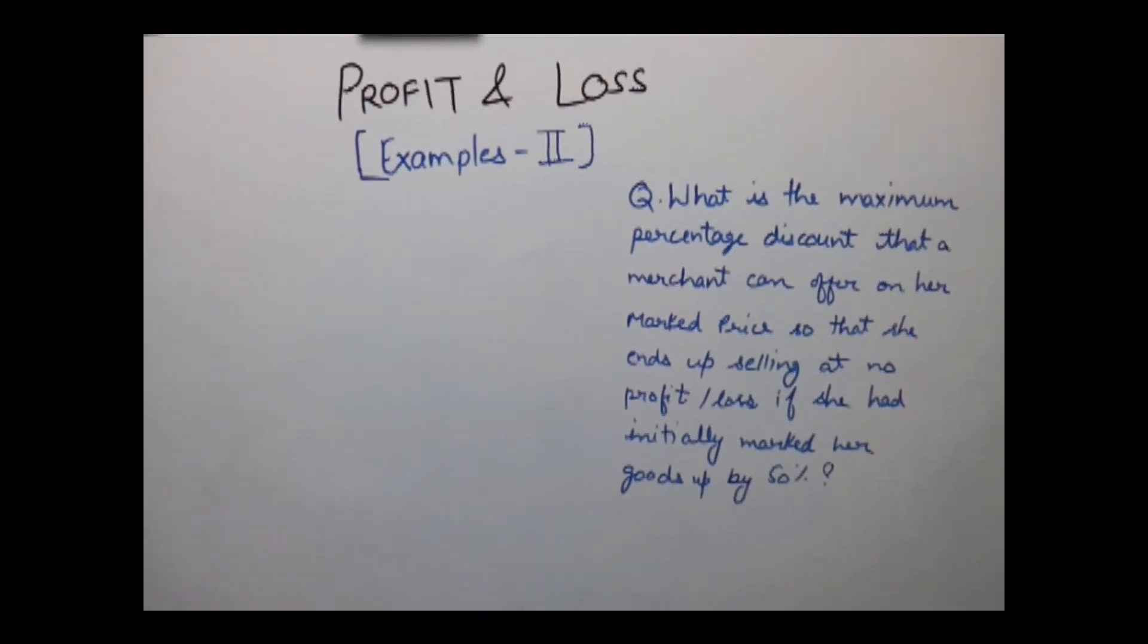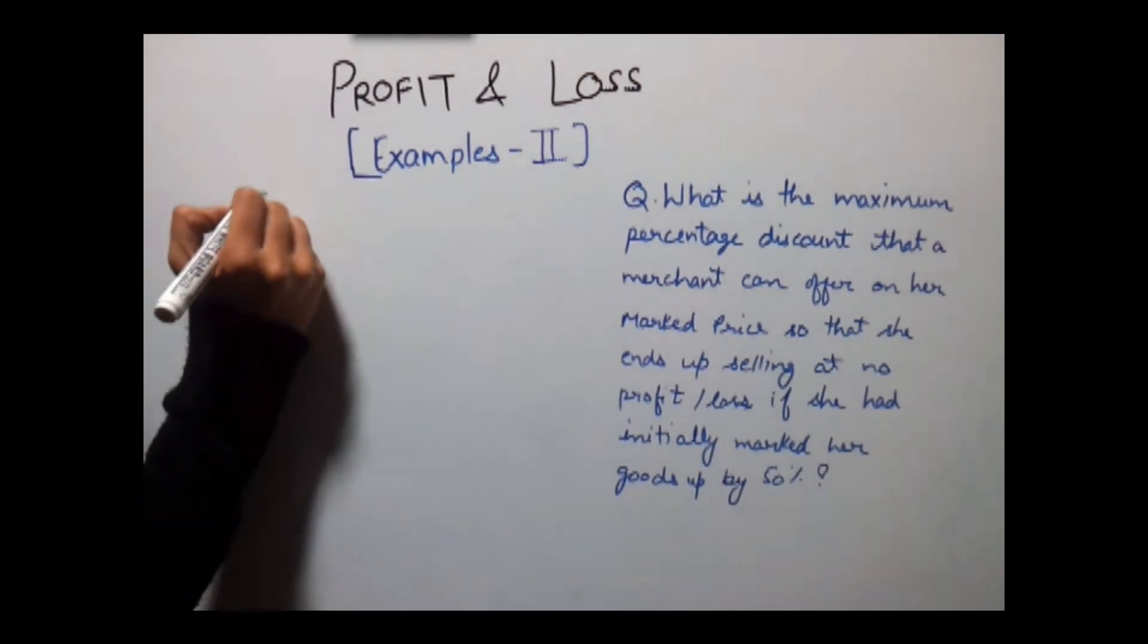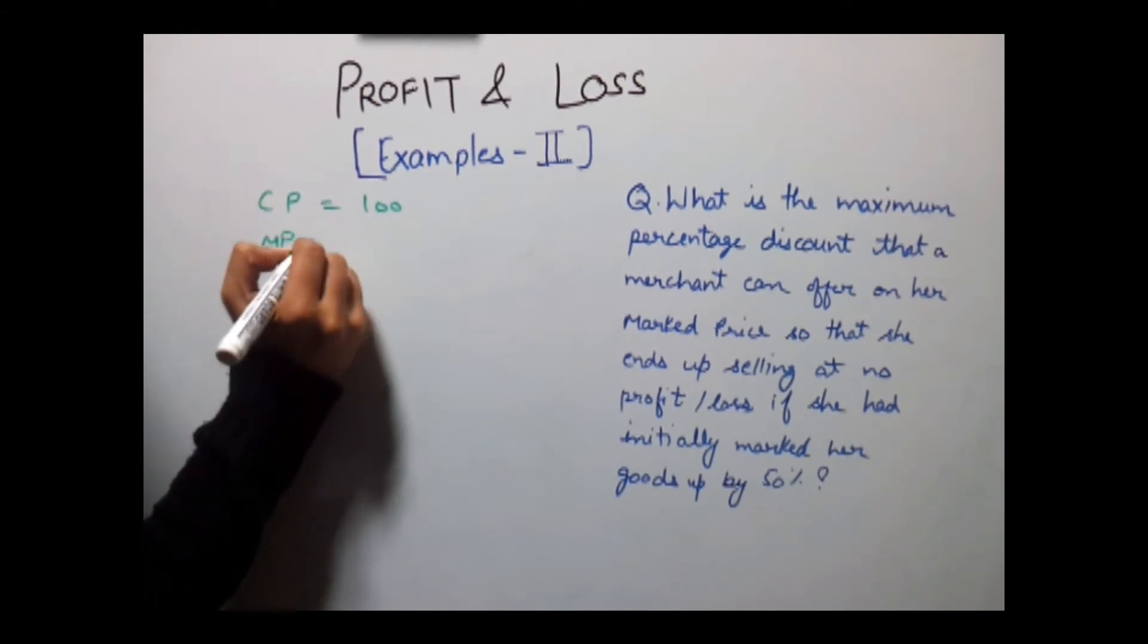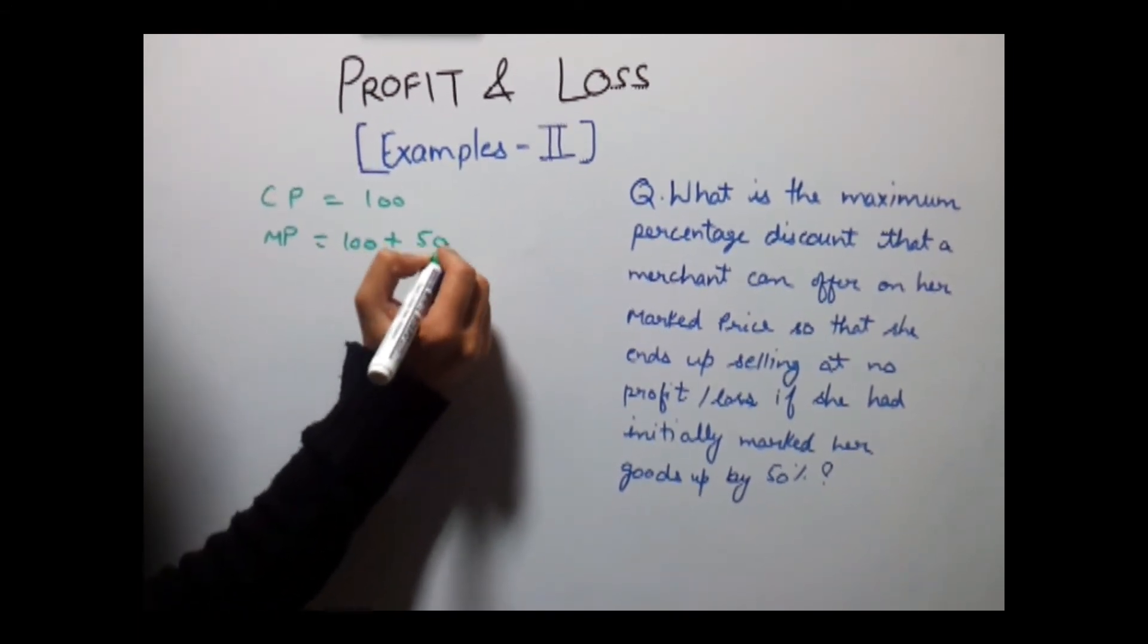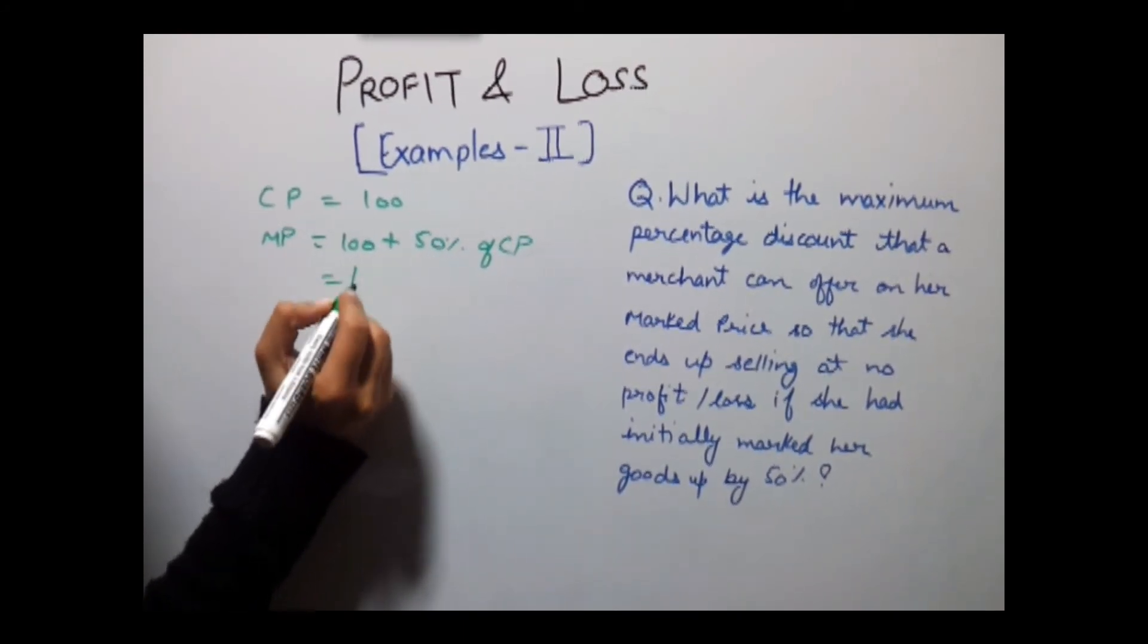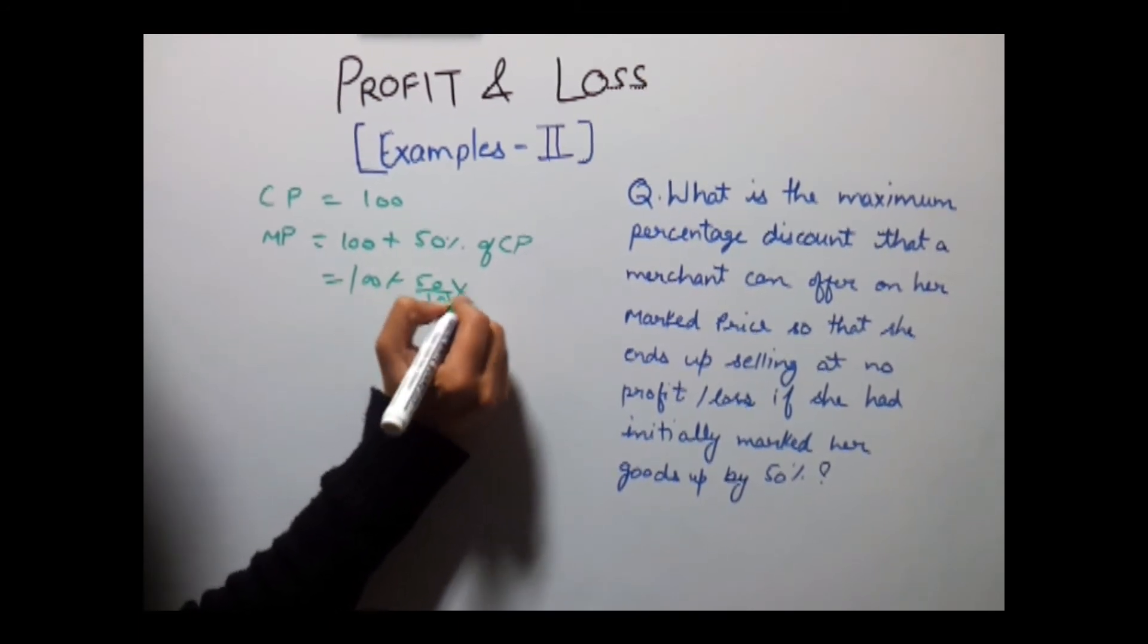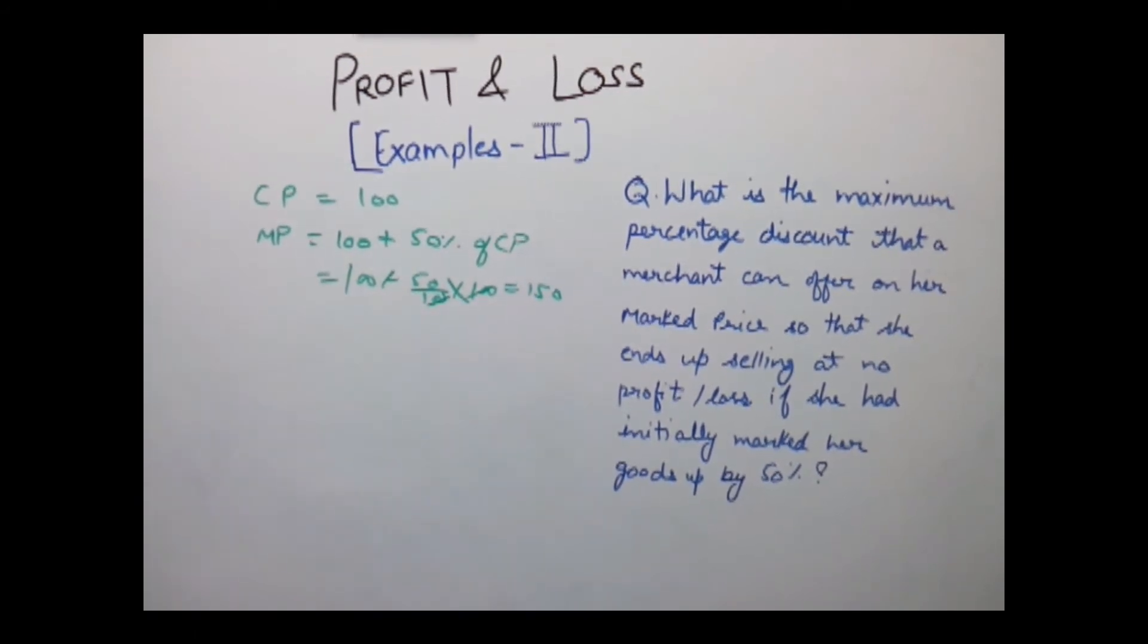So let's assume that the cost price of the product was Rs. 100. Now marked price would be equal to 100 plus 50% of the cost price, which is equal to 100 plus 50, which gives us 150 as a marked price.